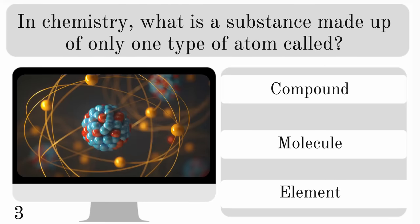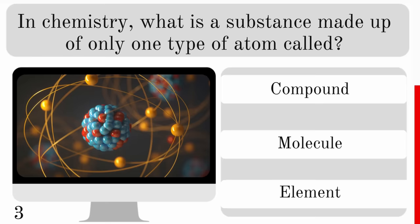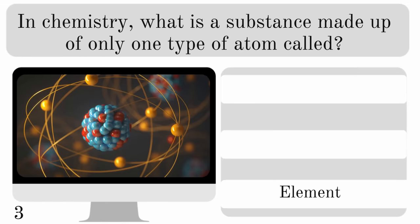In chemistry, what is a substance made up of only one type of atom called? Is it a compound, molecule or element? The answer is element.